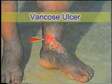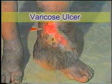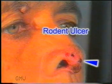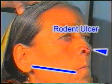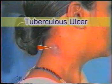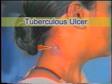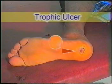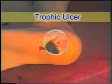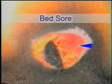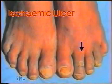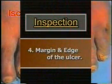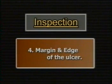For example, a varicose ulcer is located on the medial aspect of the lower third of the leg. Rodent ulcers are confined to an area of the face above the line joining the angle of the mouth to the ear lobule. Tuberculous ulcers are common in the neck over the sites of tuberculous lymphadenopathy. An ulcer on a weight-bearing area is usually a trophic or neuropathic ulcer — for example, over the heels as seen in this patient, or over the sacrum and other bony points in a bedridden patient. Arterial or ischemic ulcers occur over the dorsum of the foot and the toes.